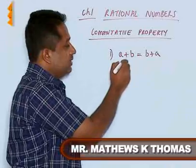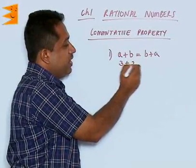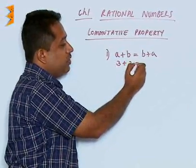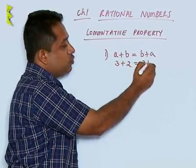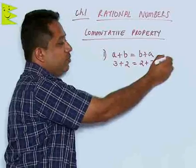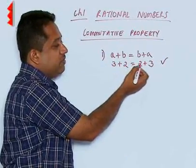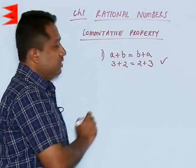Let us consider two numbers 3 and 2. When we add 3 and 2, is it the same as 2 plus 3? The answer is yes, because 3 plus 2 is 5 and 2 plus 3 is also 5.